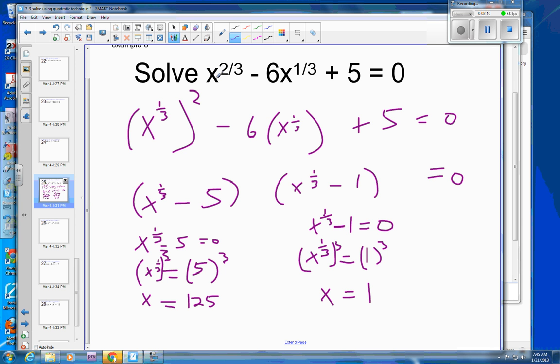So if you take 125 and put it to the two-thirds power, and then you subtract 6 times 125 to the one-third power, and then you add 5...